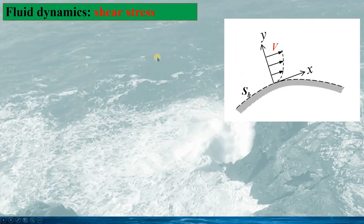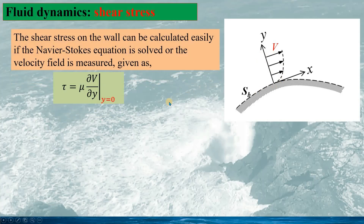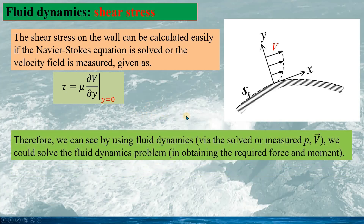Suppose we already solve the fluid field — for instance, the velocity distribution near the body surface — or if we measure the velocity distribution, then we can calculate the shear stress tau using the given formula. If the velocity distribution is measured, then the partial differentiation of the velocity with regard to y can be calculated at y equal to 0. Therefore, if we solve the fluid dynamic equation or if we measure the fluid field parameters — the pressure and the velocity — then we can calculate the force acting on the body.